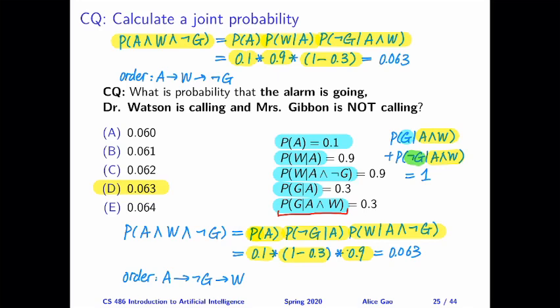There are two important points from this exercise. One is that depending on the order we choose, the expression that we come up with for the chain rule might be very different. And we need to choose the order based on what kind of probabilities do we have.